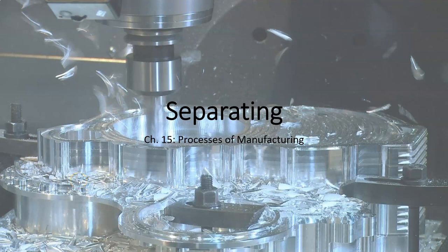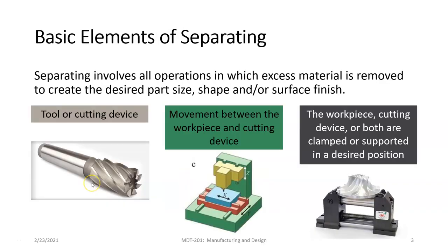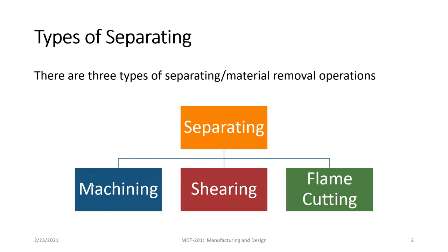We're going to be starting section four now. Section four is called separating, and we start with chapter 15. In chapter 15, we're going to be looking at the three types of separating or material removal operations. Separating as a production process can be divided into three broad categories: machining, shearing, and flame cutting.